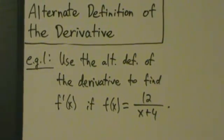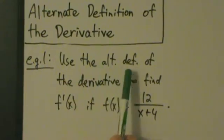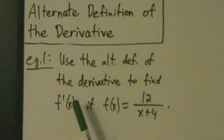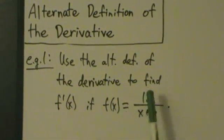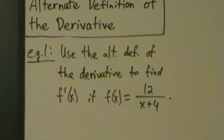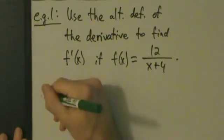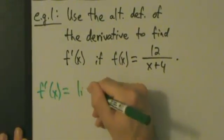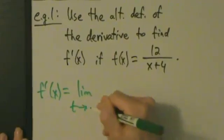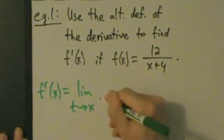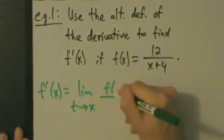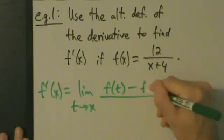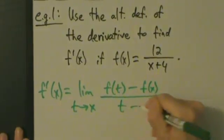Here's example one of using the alternate definition of the derivative. Use the alternate definition to find f prime of x if f of x equals 12 over x plus 4. Our alternate definition tells us that f prime of x equals the limit as t approaches x of f of t minus f of x, divided by t minus x.